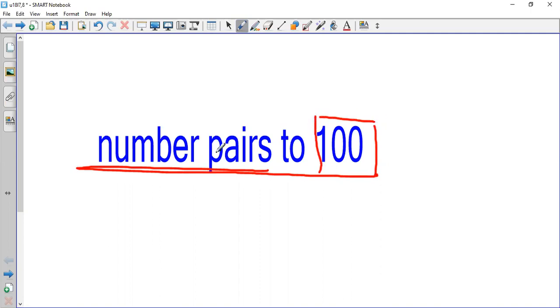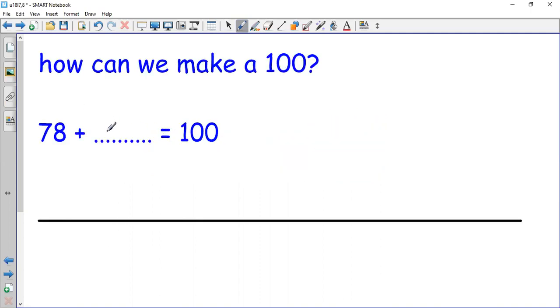How can we make 100? Here I have 78. I'm asking how many steps from 78 to reach 100? Or 78 plus what makes 100?